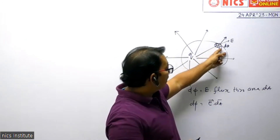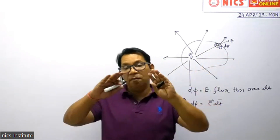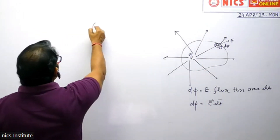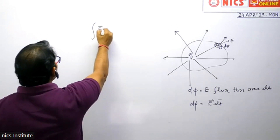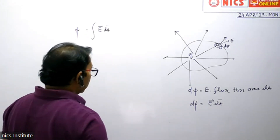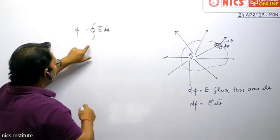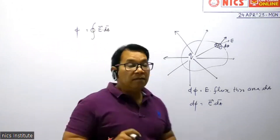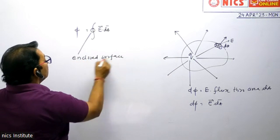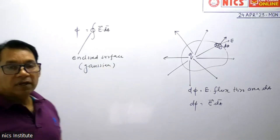For each small area element DA, we find the electric flux. We can calculate the electric flux at every small area, and then we add them all. In math, addition means integration. So if I integrate the entire E dot DA over the complete Gaussian surface, I put a circle on the integral sign. The circle means it is an enclosed surface — a three-dimensional enclosed Gaussian surface.